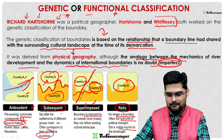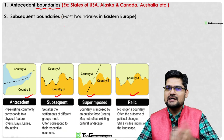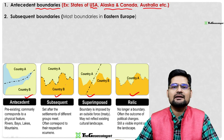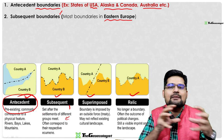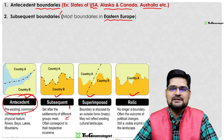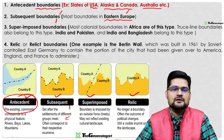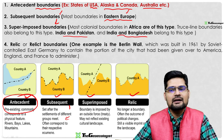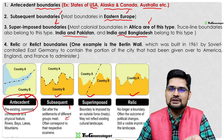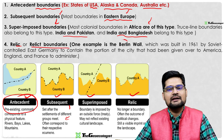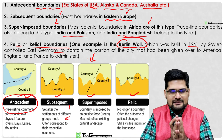Examples of each type: antecedent boundaries are prevalent in the United States-Alaska-Canada border and Australia. Subsequent boundaries are very common in Eastern Europe, Central Asia, and South Asia, where ethnic groups are separated. Superimposed boundaries are found in Africa, and the India-Pakistan and India-Bangladesh borders, where an outside force initially divided and later a treaty formalized the separation. A classic example of a relic boundary is the Berlin Wall, built in 1961 in East Germany.